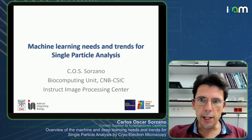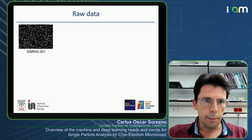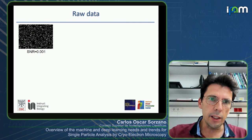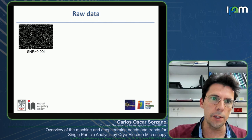My talk today is about machine learning needs and trends for single particle analysis. I'd like to start by presenting how the raw data looks like. When you look at the frames, the signal-to-noise ratio is in the order of one over a thousand, meaning that you have a thousand times more noise than signal.